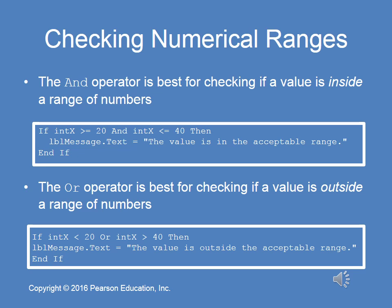The AND operator is very useful for checking if a value falls within a range of numbers. If you want to see if intX is between 20 and 40: 'If intX >= 20 And intX <= 40' — note that greater than or equal to includes the boundary points 20 and 40. The OR operator is best for checking if a value is outside a range: 'If intX < 20 Or intX > 40.'